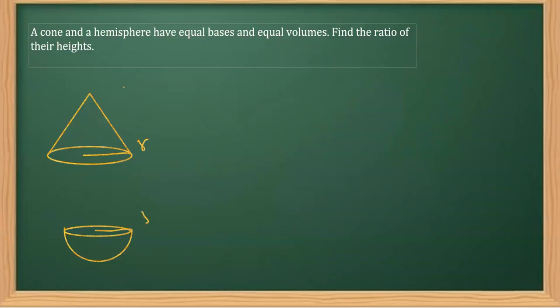It says that let's say the radius of this is r, and the radius of this should also be taken as r. Why? Because it says they have equal bases. Equal bases means their base is equal, which implies their base radius should also be equal. So we have their radii as equal.